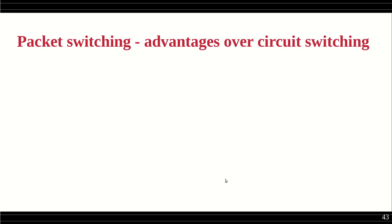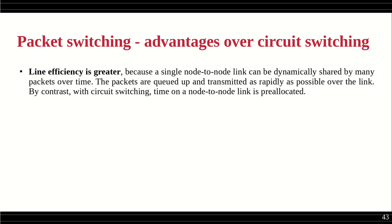To conclude, here are the advantages of packet switching over circuit switching. First, line efficiency is greater: a single node-to-node link can be dynamically shared by many packets over time. There is no dedicated path — the same communication channel is shared by more than one message. Packets are queued and transmitted as rapidly as possible over the link. By contrast, with circuit switching, time on a node-to-node link is pre-allocated, but here there is no pre-allocation, so sharing is greater and line efficiency is higher.